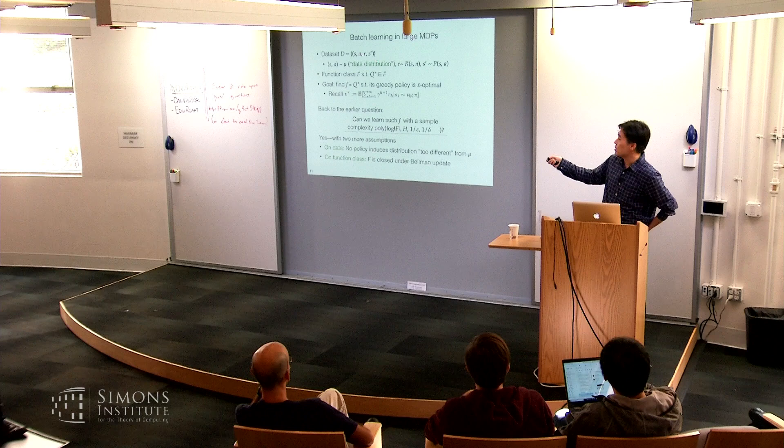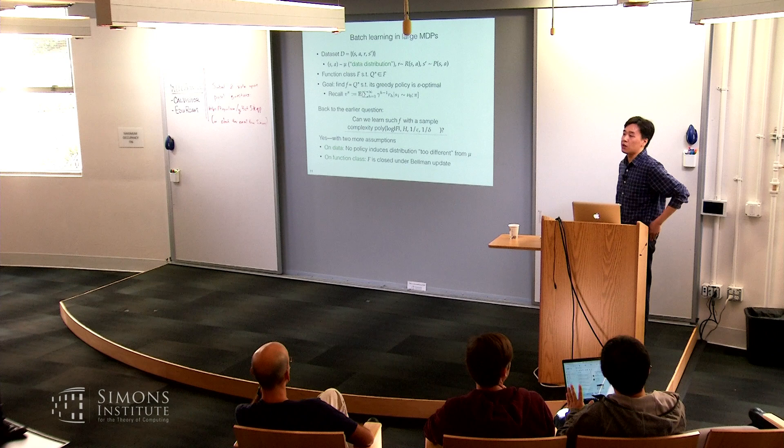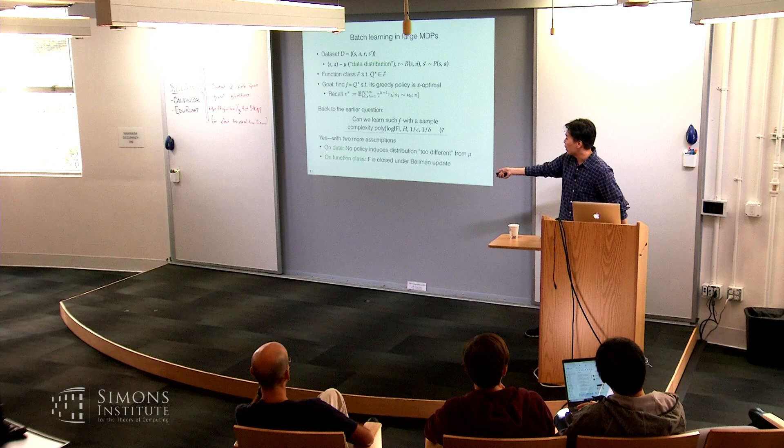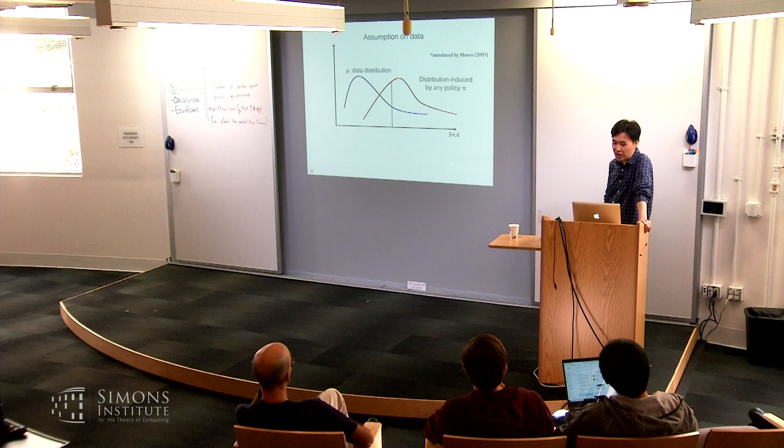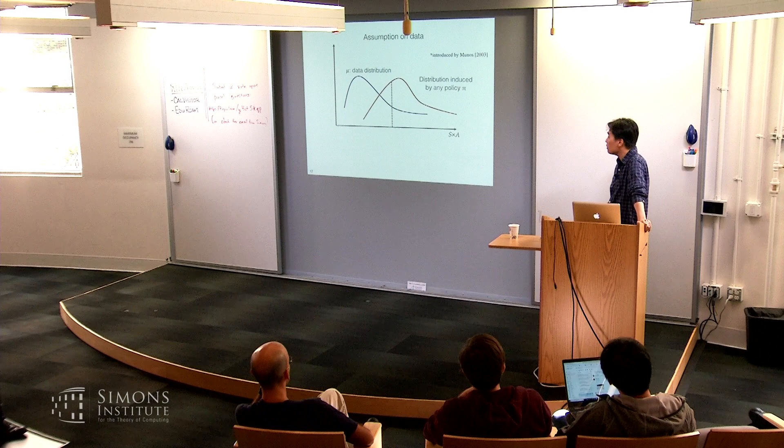An audience member asked what μ is. μ is the data distribution — for simplicity, the state-action pairs are IID from μ. It's not from the optimal policy but from an exploratory distribution. The learner may or may not know μ, but most algorithms are agnostic to that knowledge and it doesn't really matter here.